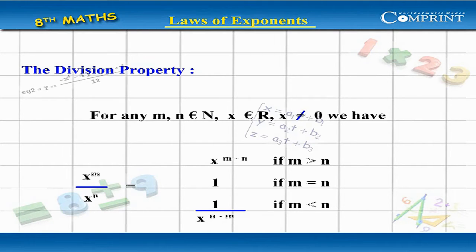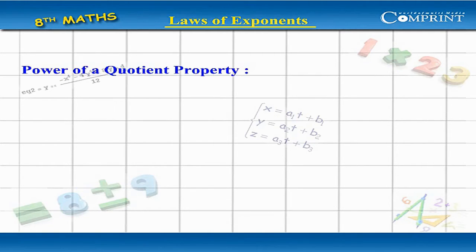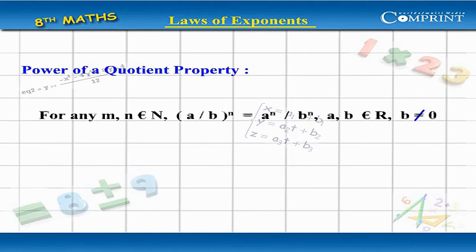Power of a Quotient Property: for any n belonging to capital N, a by b whole to the power n equals a to the power n by b to the power n, where a and b belong to R and b does not equal 0.